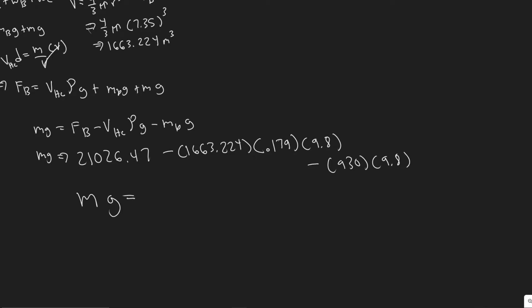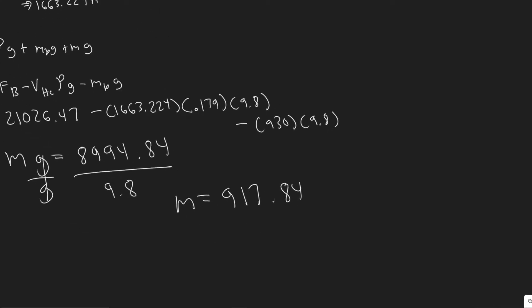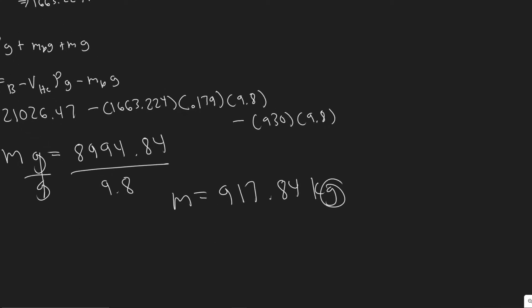When you compute this, you get mg equals 8994.84. Dividing by g (9.8), you get m equals 917.84 kilograms. This is the amount in kilograms that this balloon can carry — the maximum cargo the buoyancy force allows.